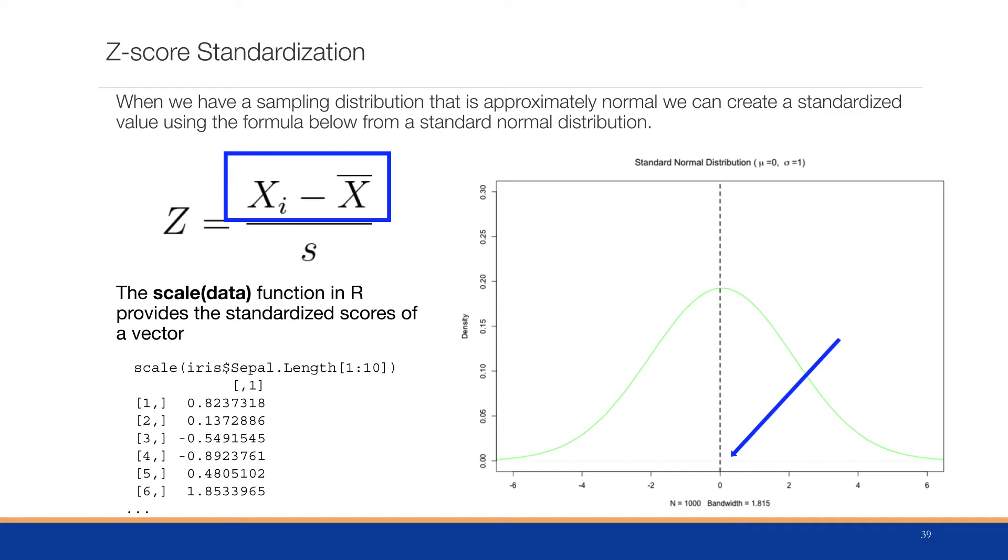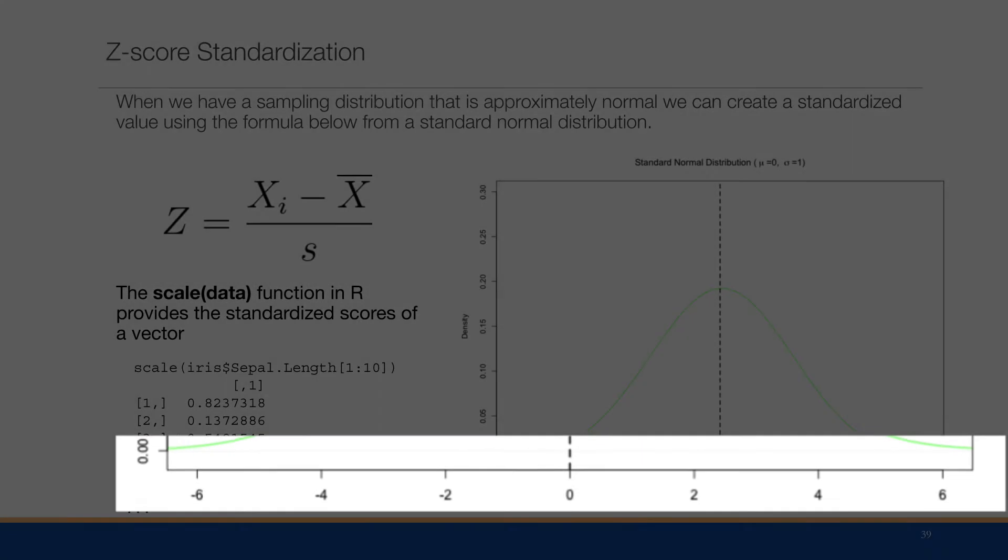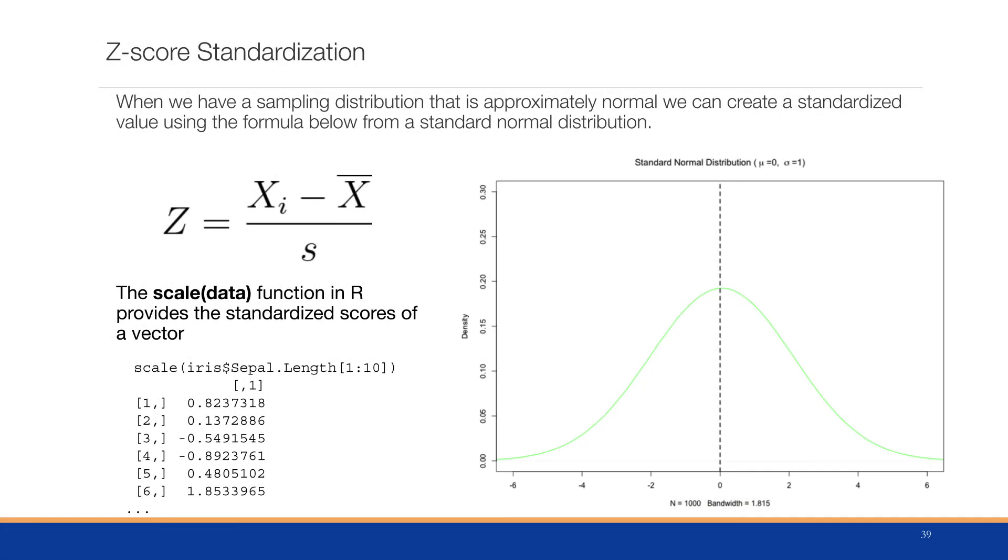The bottom scale, or the bottom axis, actually refers to the number of standard deviations away from the mean. So if a number is at the mean, then the number of standard deviations would be zero. If we have other numbers, let's say negative one, that would be one standard deviation away from the mean to the left. And if it was a positive one, it would be one standard deviation away to the right. So the z-score is actually a representation of the number of standard deviations away from the mean.